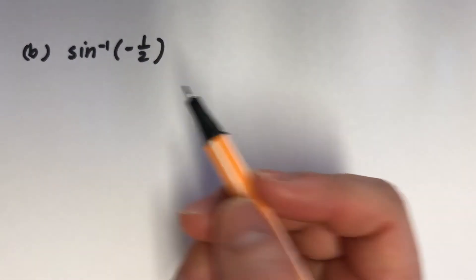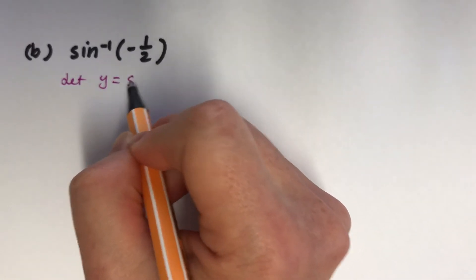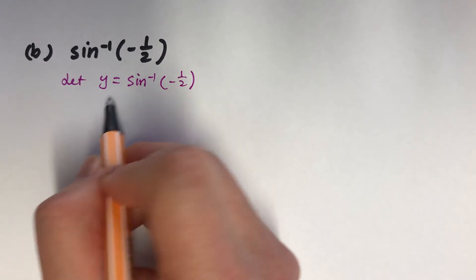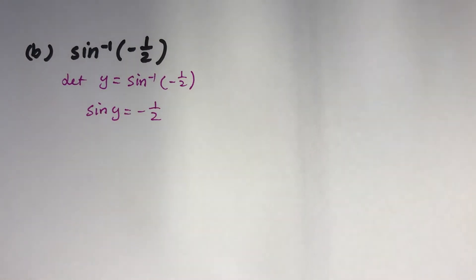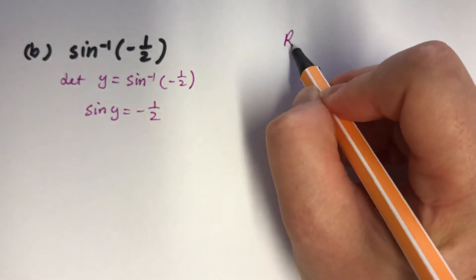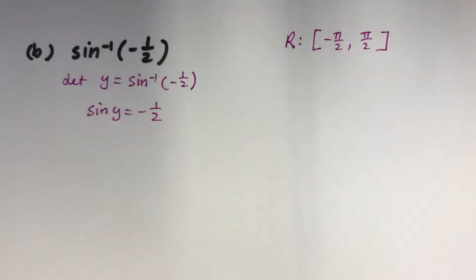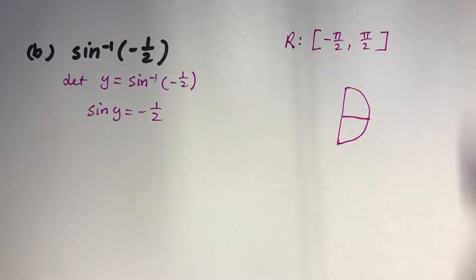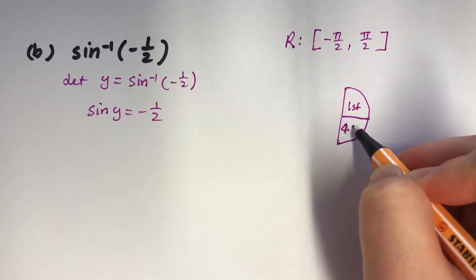Inverse sine negative half. Let y equals inverse sine negative half. So sine y equals minus half. So my sine value is negative. What's my range? My range is minus pi over 2 to pi over 2 inclusive. And it's the same as tan in the sense of quadrants. So it's going to be 1st quadrant and 4th quadrant.